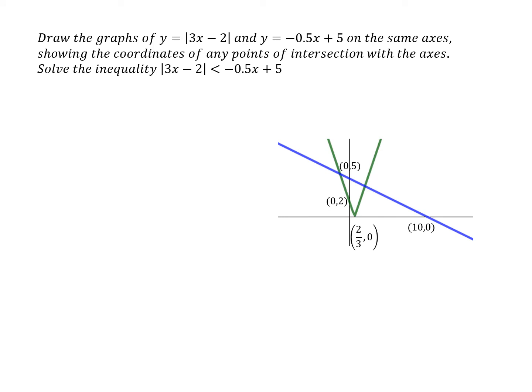Now we've got to solve this inequality. Modulus of 3x minus 2 is less than minus 0.5x plus 5. So this is where the modulus graph is below the linear graph.